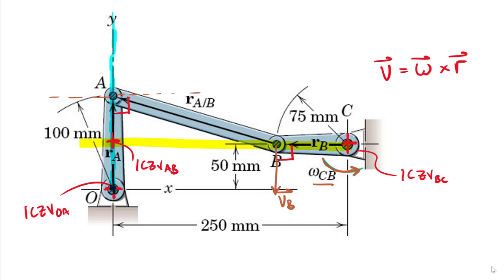Once we have that ICZV point, we know that it acts like a fixed axis at this instant for body AB, so AB is rotating around this point. We know V_B is going down. Keep in mind the velocity of B on AB is exactly the same as the velocity of B on BC — at points of contact, both velocities and tangential accelerations are exactly the same. So in order for V_B to go down, we must have an omega of AB — in a negative right-hand rule direction.